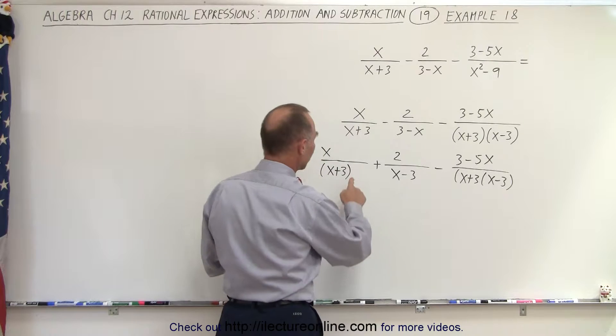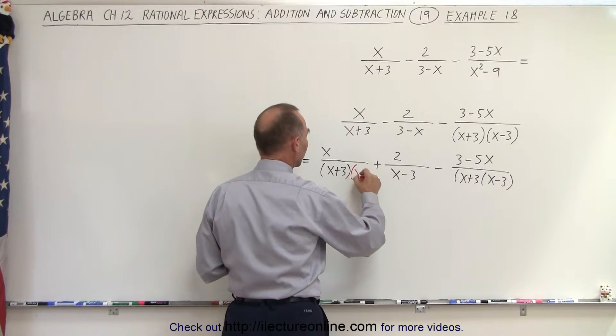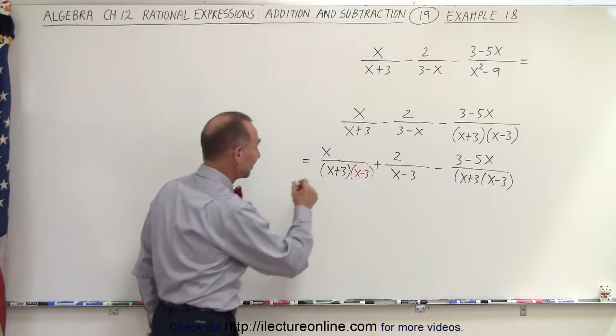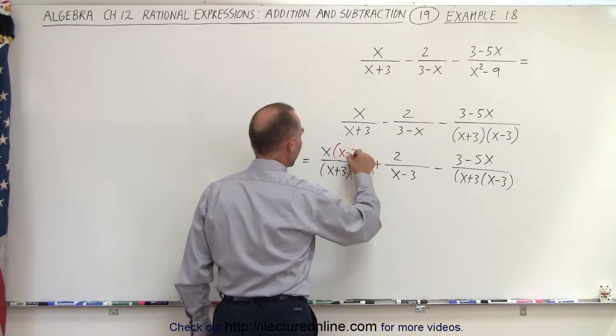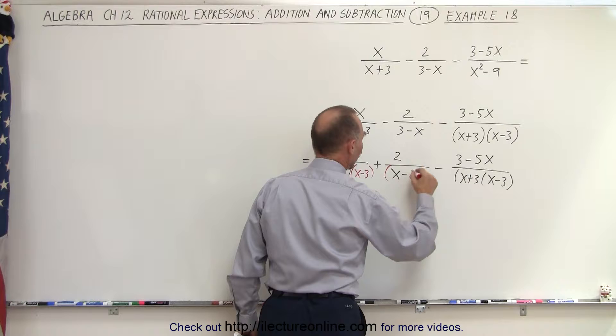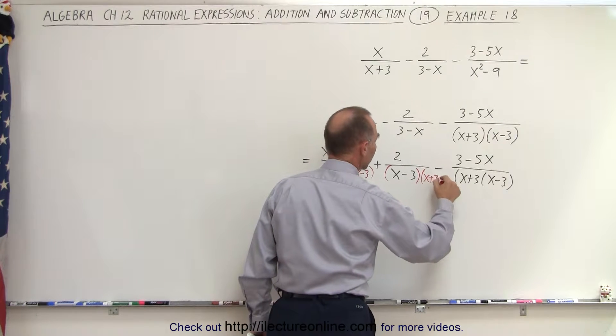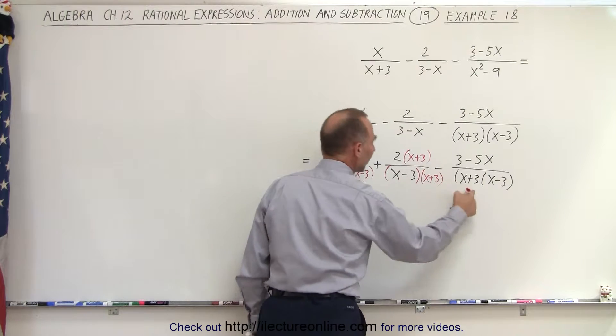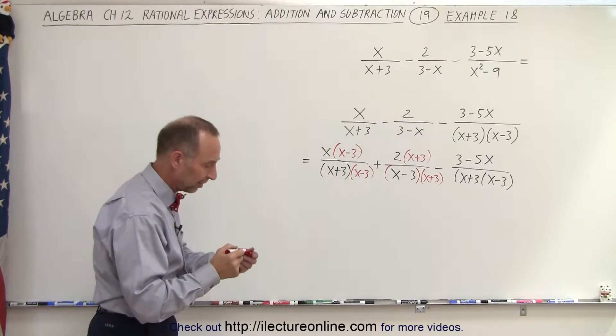I can do that by multiplying this denominator by x minus 3. And when I do that to the denominator, I must do exactly the same to the numerator. Here, I need an x plus 3, and I need to do the exact same to the numerator. And now notice that each denominator looks exactly the same.